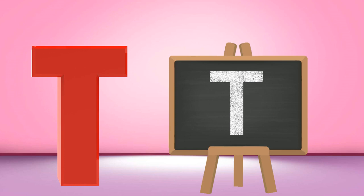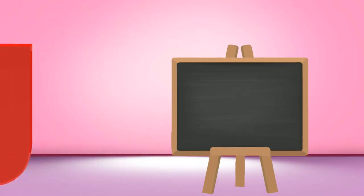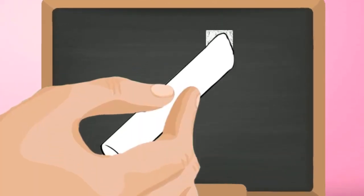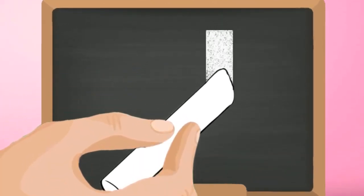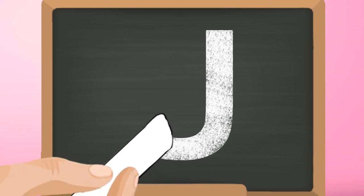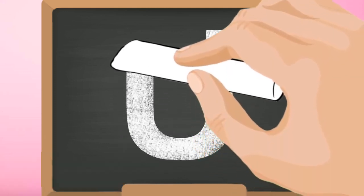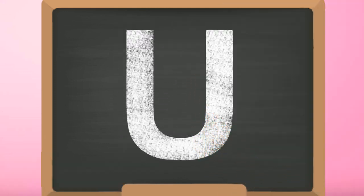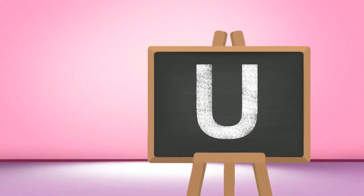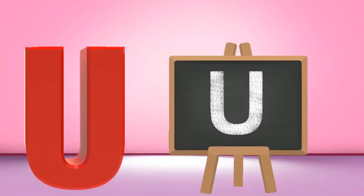U, capital U. Start from the top and draw a standing line down. Then curve towards the right and keep going up to reach the top. Capital U.